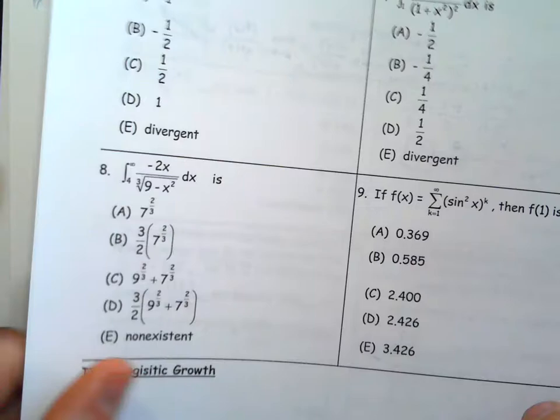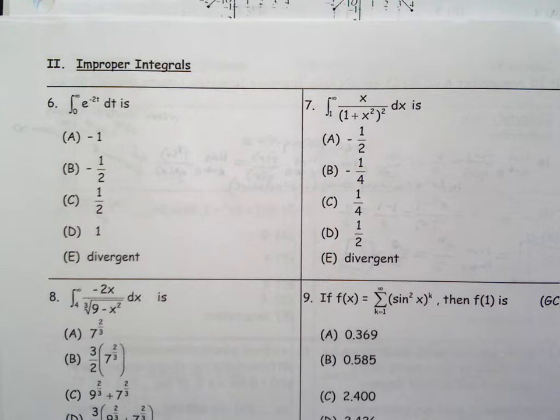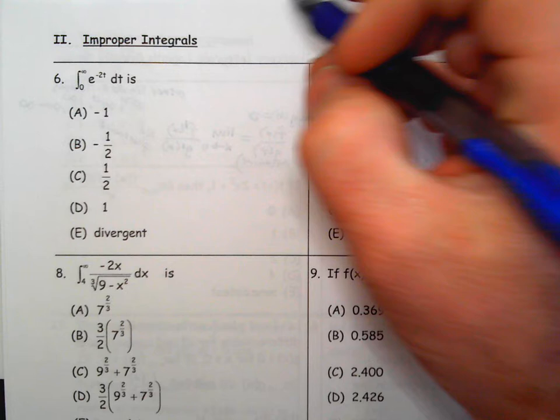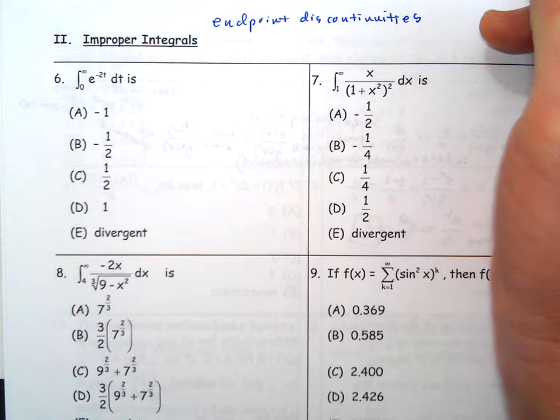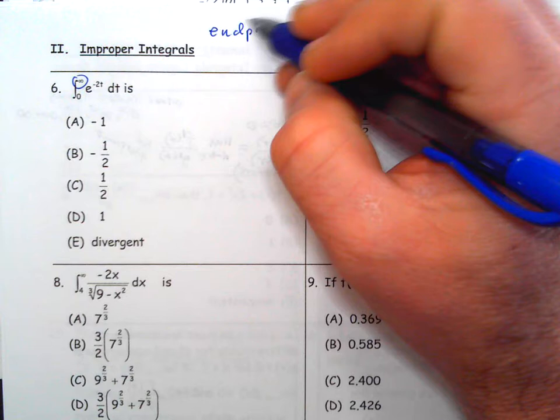On the next page, we'll talk about improper intervals. Improper means generally that we're integrating with something going to infinity. So you could have endpoint discontinuities — where you have an infinity — and for those, what we do is approach them as limits.